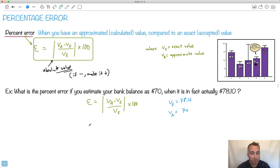So it's just as simple as showing your substitution. What I mean by substitution, it's when you substitute, you put something in the calculator, or in this case in the equation. So I would say absolute value of VA, so I would just say it's 70 minus 78.10, all that over VE, which is 78.10, absolute value, and times 100.